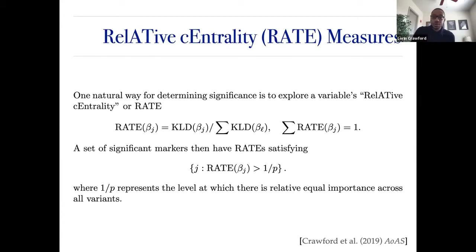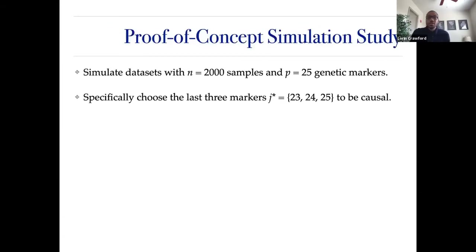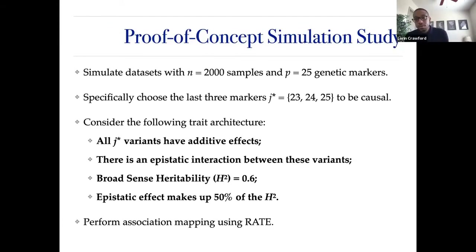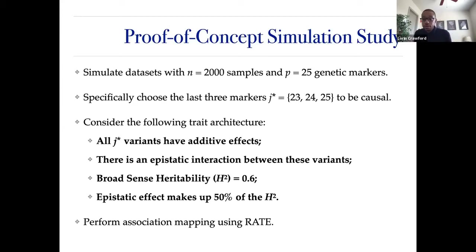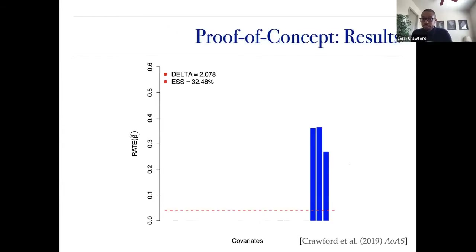In simulations with 2,000 samples and 25 genetic markers, where only markers 23, 24, and 25 are causal — Jordan, Pippen, and Rodman — we fit a Gaussian process, compute effect size analogs, and compute RATE measures for every variable. Jordan, Pippen, and Rodman are identified as the three most important players. On the Y-axis are RATE measures; on the X-axis are all variables; the red line is the one-over-P null of no stars on the team.